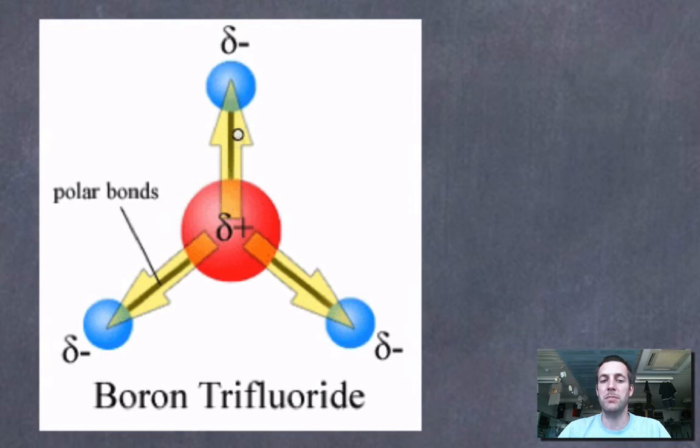So this bond is polar. There's an uneven distribution of charge in it, and it's got a negative end and a positive end. So each one of these bonds in boron trifluoride would be polar, and each one of them would have a slightly negative end at the fluorine and a slightly positive end at the boron.